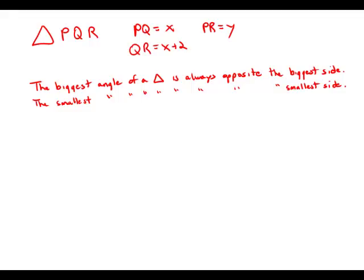In triangle PQR, if PQ equals X, QR equals X plus 2, and PR equals Y, which of the three angles of the triangle has the greatest degree measure?